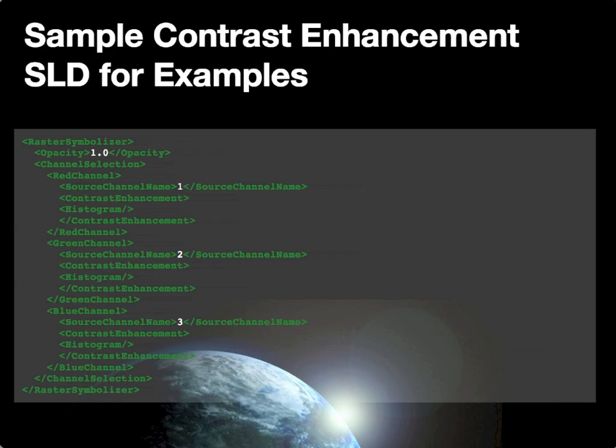The contrast enhancement SLD example applies an individual contrast enhancement option — either histogram, gamma, or normalize — to each of the three channels defined in the raster symbolizer: red, green, and blue, which have been mapped from the corresponding bands in the source image.